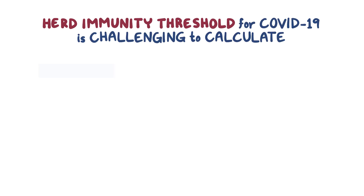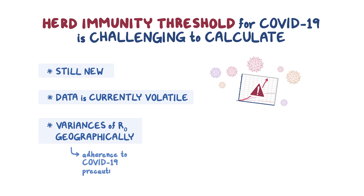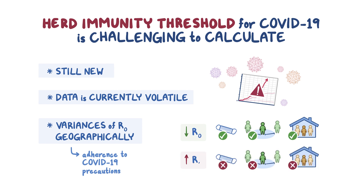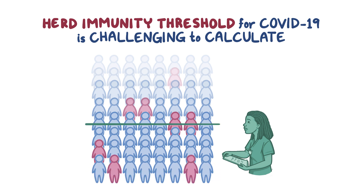The herd immunity threshold for COVID-19 is fairly challenging to calculate because the disease is still relatively new and COVID-19 data is currently volatile. For example, early on in the outbreak it was hard to track down true positive cases because COVID-19 testing was unreliable. Another issue relates to the wide variances of R0 values between geographical locations. Populations with high adherence to COVID-19 precautions such as consistent mask wearing, social distancing, and implementation of stay-at-home orders have lower COVID-19 R0 values than populations who do not adhere to these precautions. We calculate these R0 values by regularly running epidemiological studies in populations where researchers track how the disease is moving through the given population.